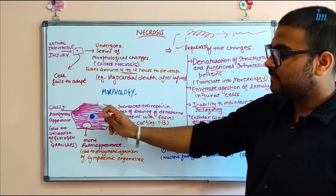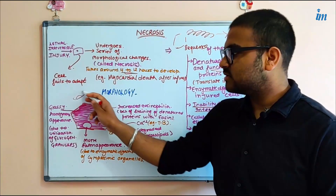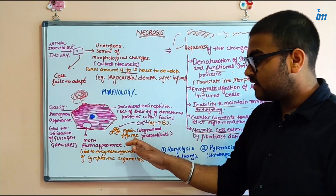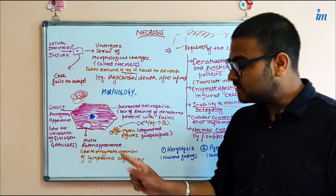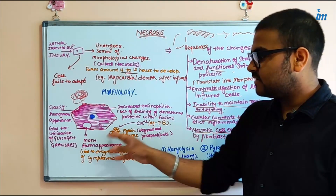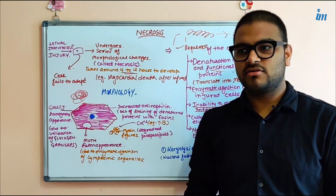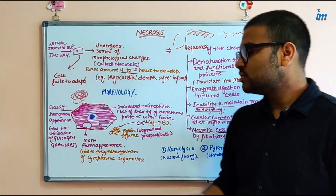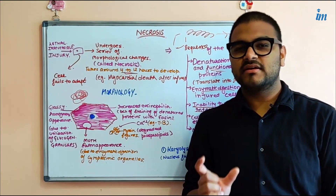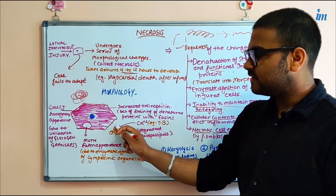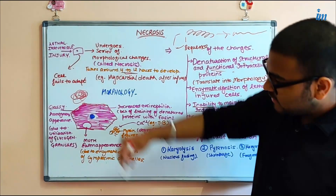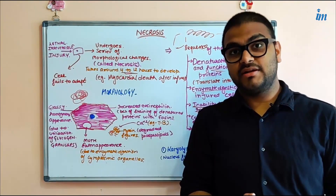Another morphological feature: when the membranes of the cell are destroyed, they curl up and are now called myelin figures. The presence of myelin figures is an indicator of irreversible cell injury. These myelin figures are made up of phospholipids — they are cut-up and destroyed parts of the phospholipid membranes, so they are degraded phospholipids.